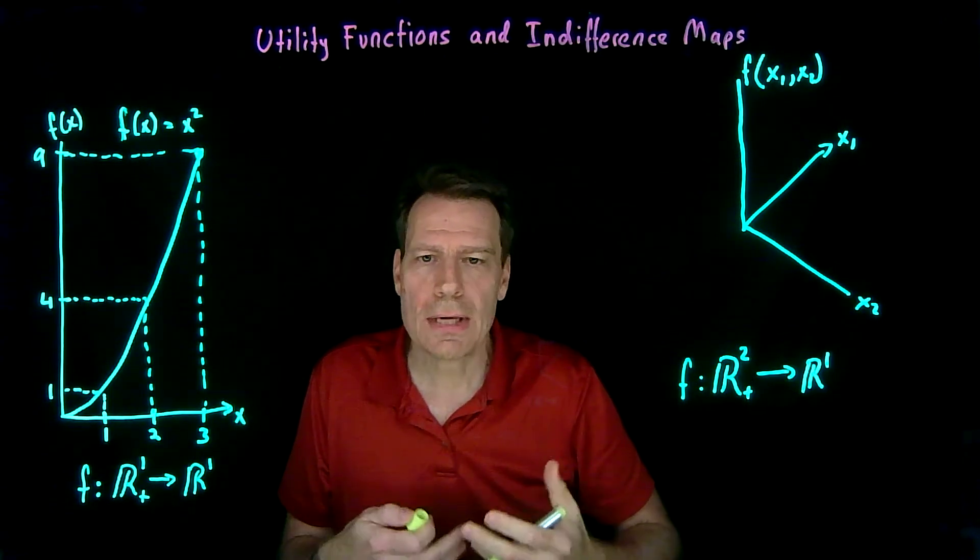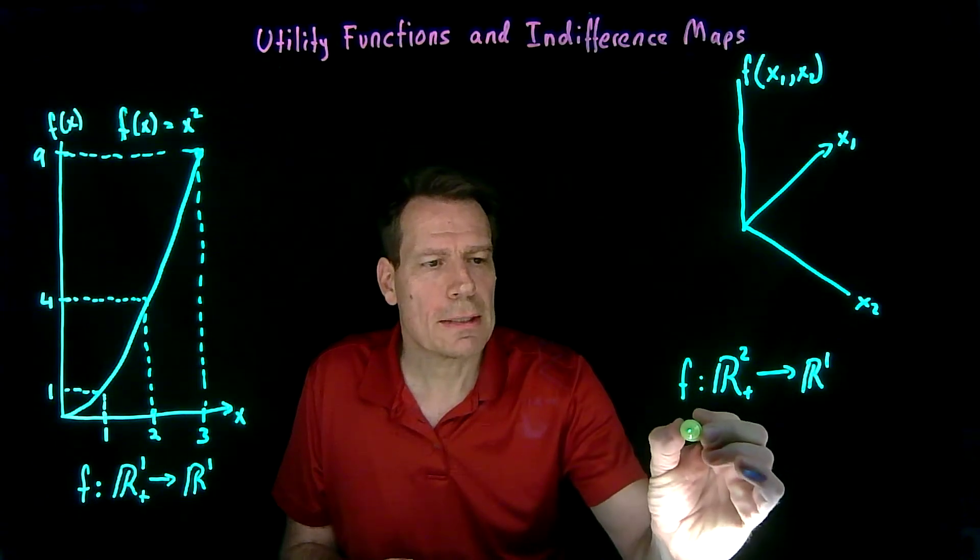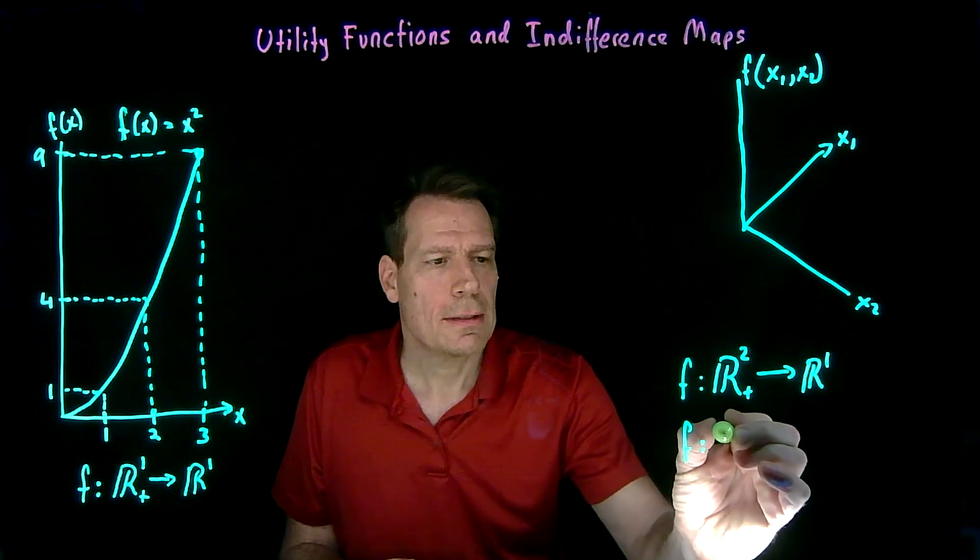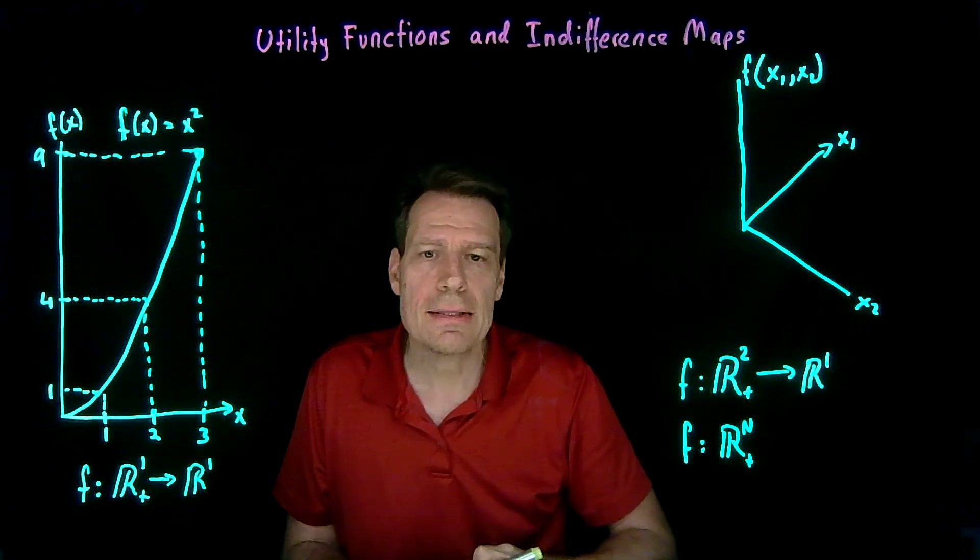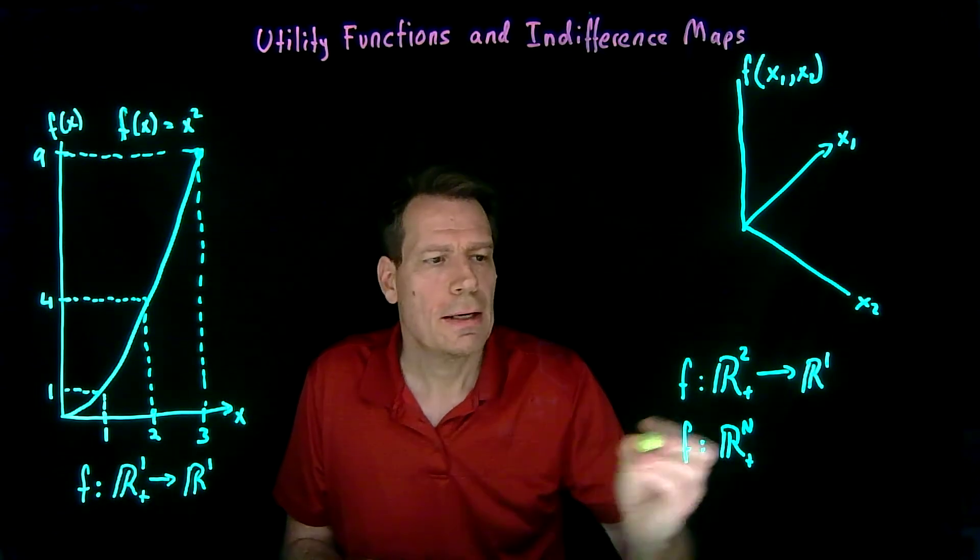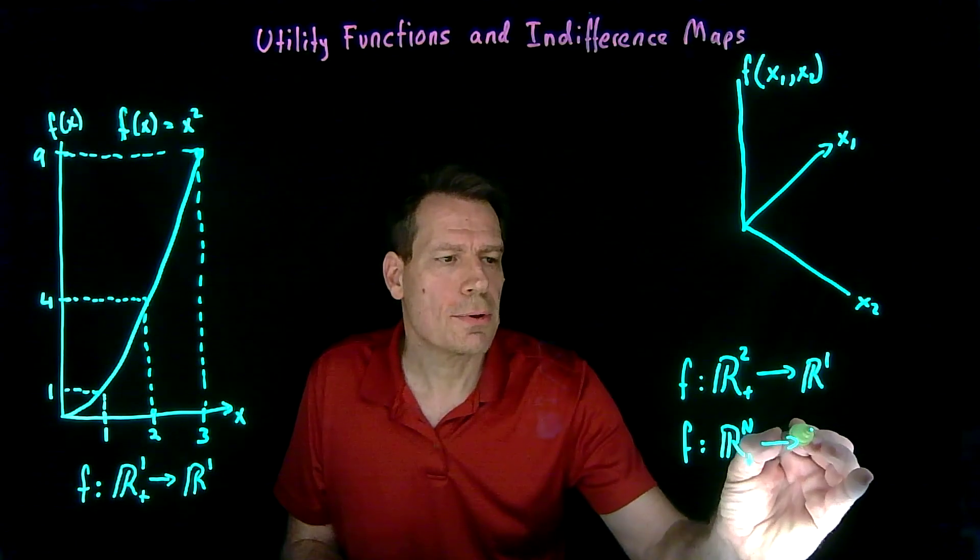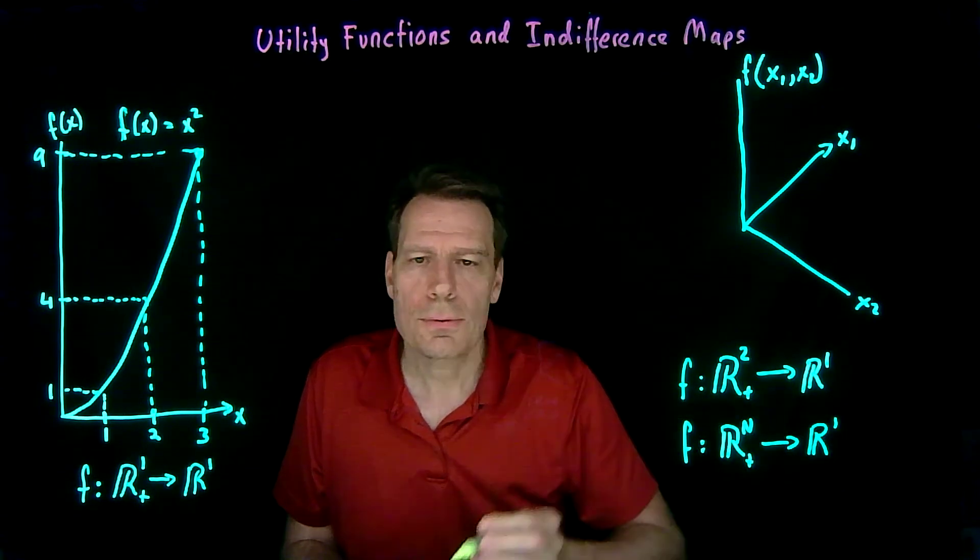And of course you could do the same thing with a more complicated space. You could have a function that takes points that have n different components, that lie in n dimensions that we can't graph, and still assign numbers on the real number line to those points.